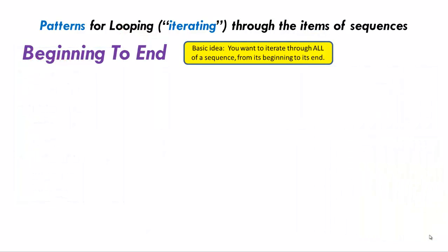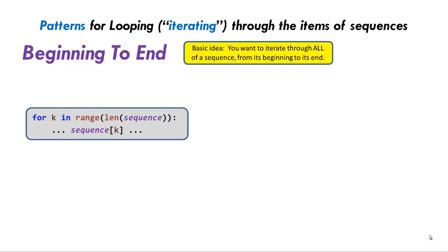In our first iterating pattern — our first pattern for looping through the items of a sequence — we'll talk about the beginning-to-end pattern, where you iterate through all of a sequence from its beginning to its end. This is the basic pattern. Here it is in Python.